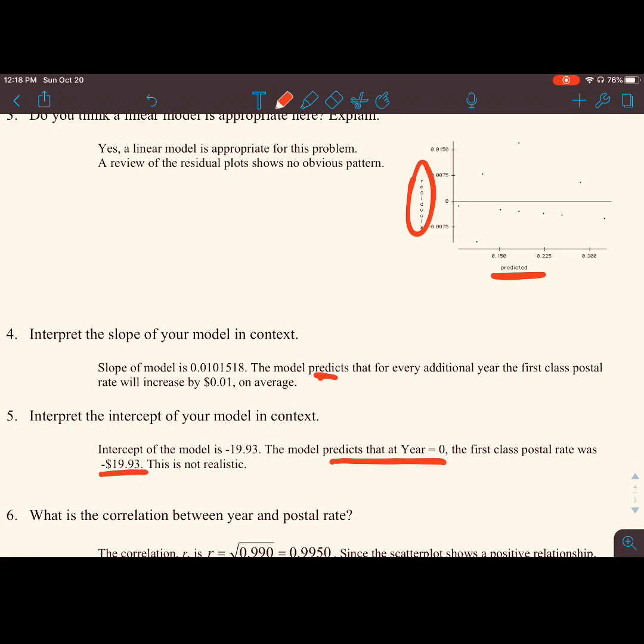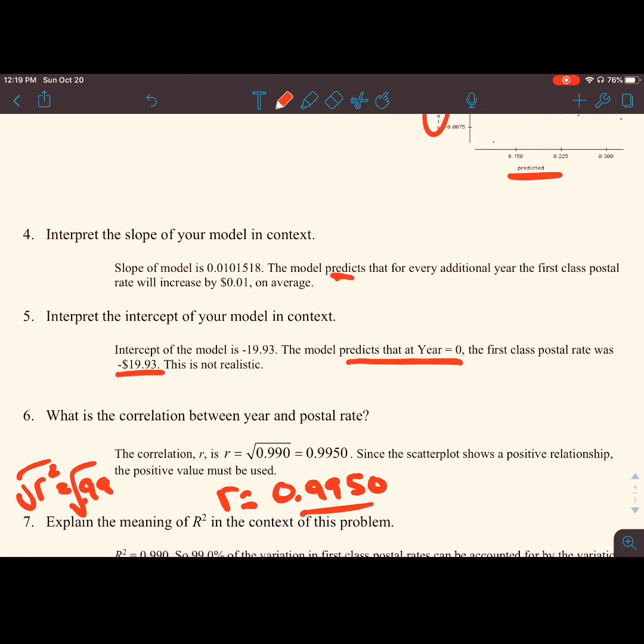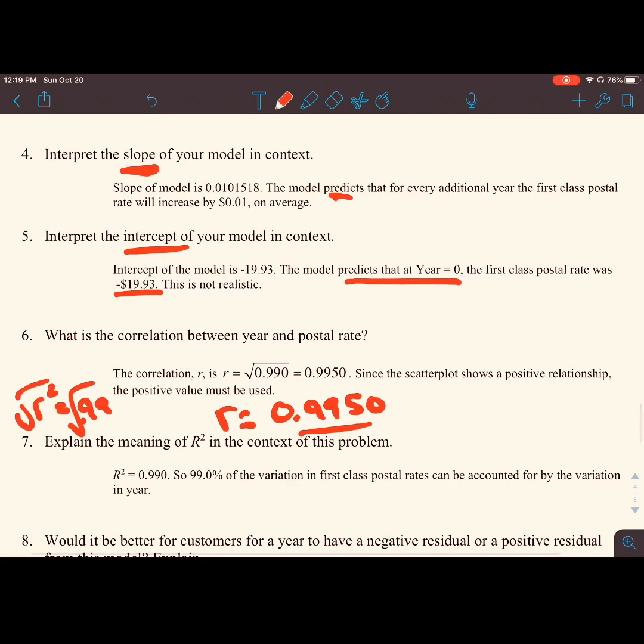What is the correlation between the postal rate and year? We had, if r squared equals 99%, so 0.99. If you take the square root of that, it's going to be plus or minus 0.9950. As we saw, our scatter plot was linear, that's why we drop the negative sign and just keep r, our Pearson's correlation coefficient, to be positive. Since the scatter plot shows a positive linear relationship, the positive value must be used.